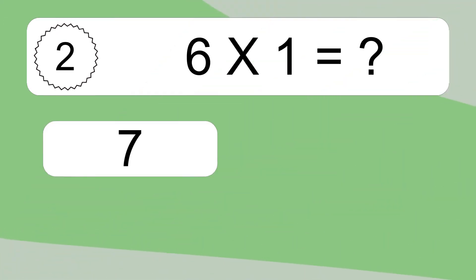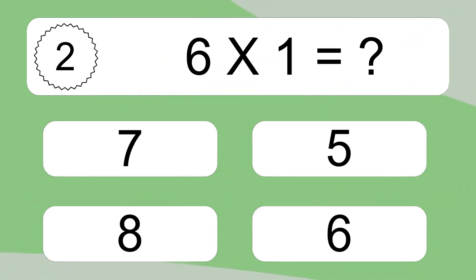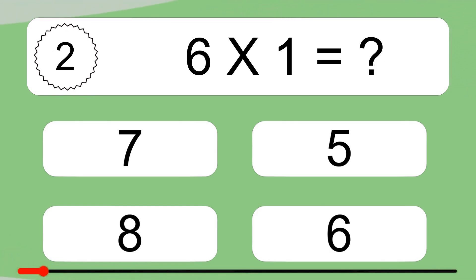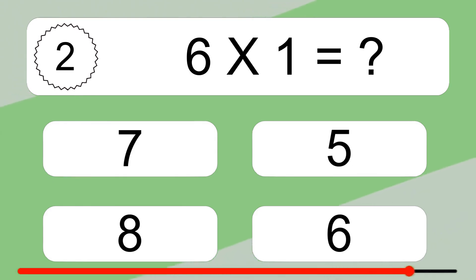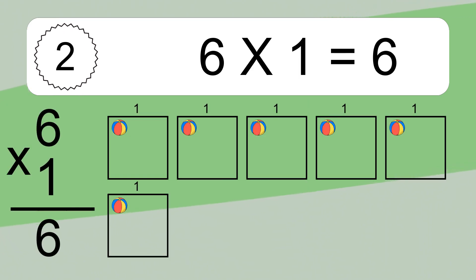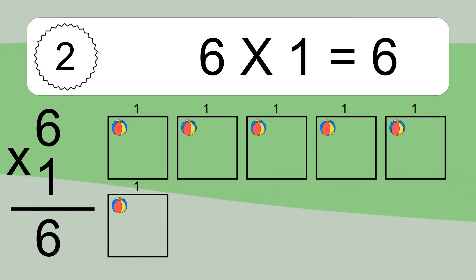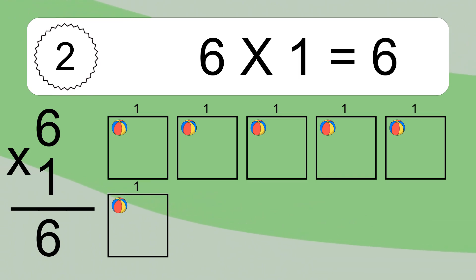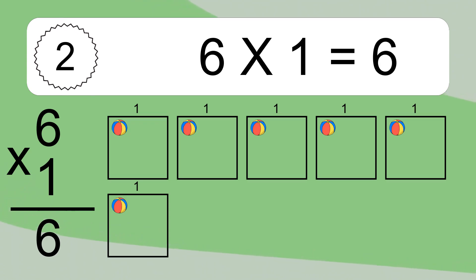6 times 1 equals what? 6 times 1 equals 6. We have 6 boxes, and each box has 1 colorful ball inside. If you count all the balls in all the boxes together, you will have 6 times 1 balls.